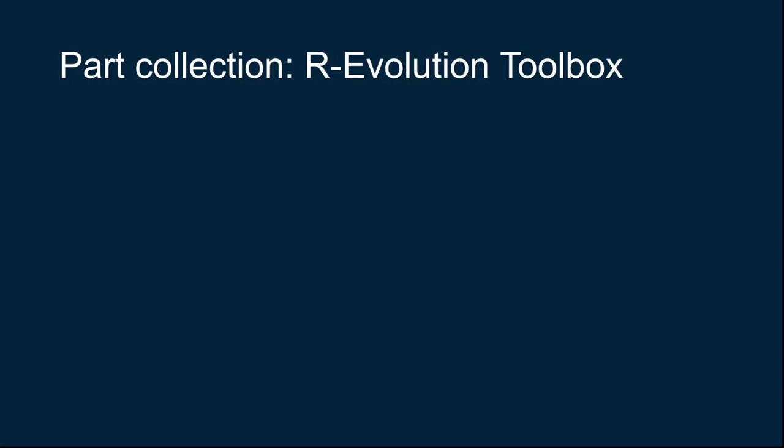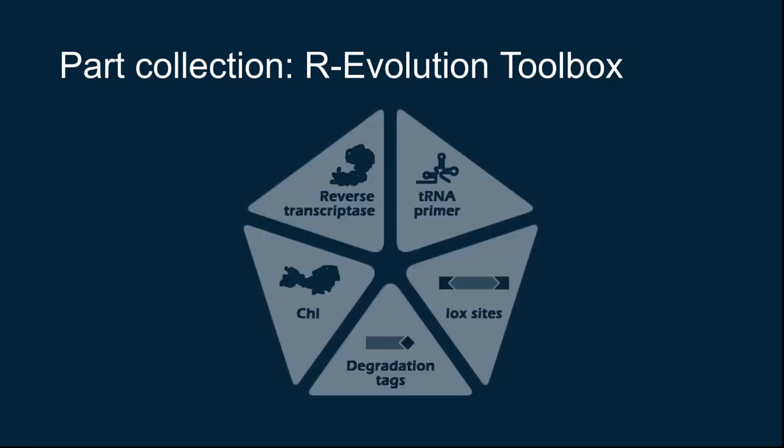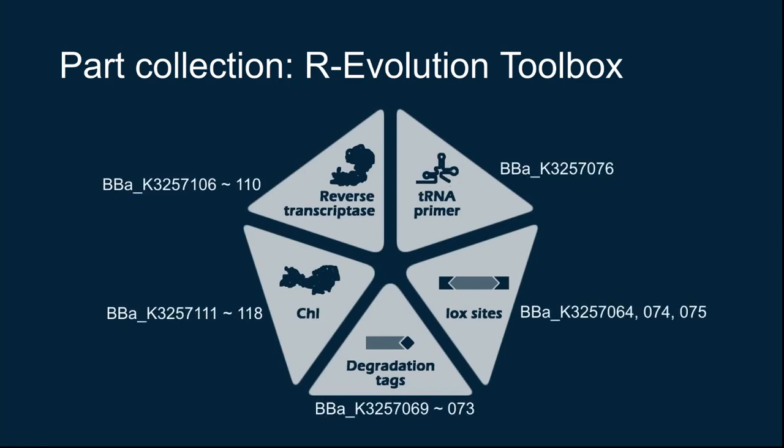We have created a collection of parts for the self-tailoring of our mutagenesis system. The collection is composed of five sections: reverse transcriptase and its mutant, tRNA primer, a series of lox sites, degradation tags, and CHL mutants. By using them, researchers could quantify the mutation rate of systems and customize its function according to their own working condition. In all, our part collection provides a complete set for the assembly, test, and optimization of continuous mutagenesis in different prokaryotic hosts.